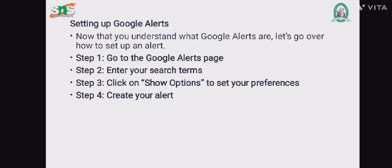Next, signing up for Google Alerts. Now that we understand Google Alerts, let's go over how to set up an alert. Step one: go to the Google Alerts page. Step two: enter your search term. Step three: click on Show Options to set your preferences. Step four: create your alert.